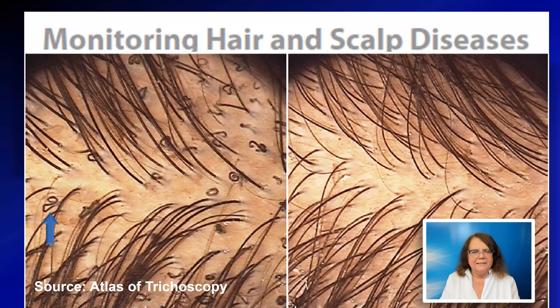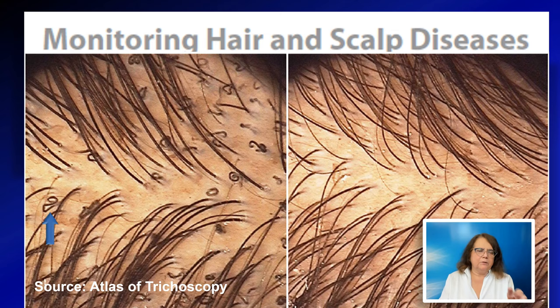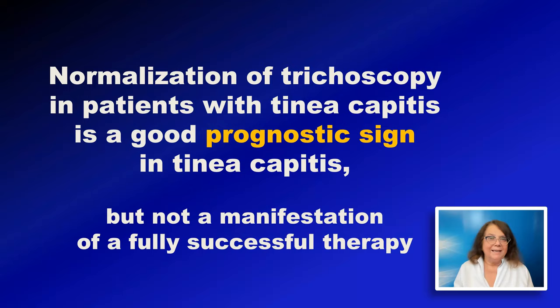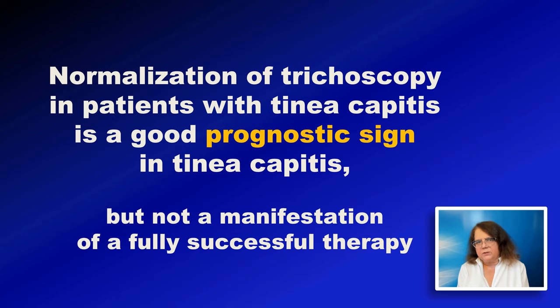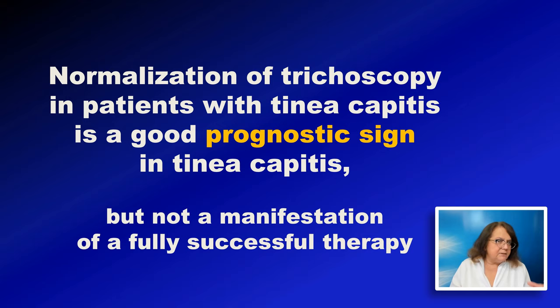Trichoscopy may also serve to monitor tinea capitis. Here you see an image with typical features of tinea capitis in a child, and on the right side the same child with no trichoscopy features of tinea capitis. However, it is important that we cannot base our decision about discontinuing treatment only on trichoscopy, because trichoscopy normalization takes place at least a few weeks before the culture is negative. So we may consider normalization of trichoscopy a good prognostic sign, but definitely not a marker of fully successful therapy.